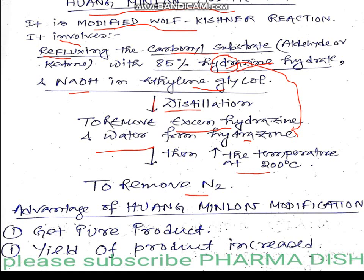So to summarize the modifications: in the first step, we reflux the carbonyl substrate with 85% hydrazine hydrate in the presence of ethylene glycol solvent and a strong base like sodium hydroxide. Then we perform distillation to remove excess hydrazine and excess water from the hydrazone. Then we increase the temperature to 200 degrees centigrade to remove nitrogen gas. The advantages of the Huang Minlon modification are that we get a purer product and the yield of the product is also increased.